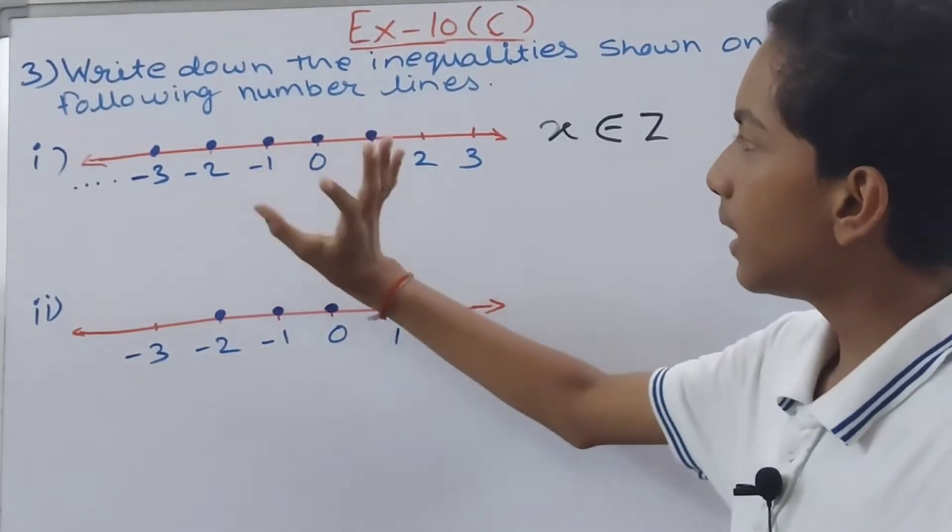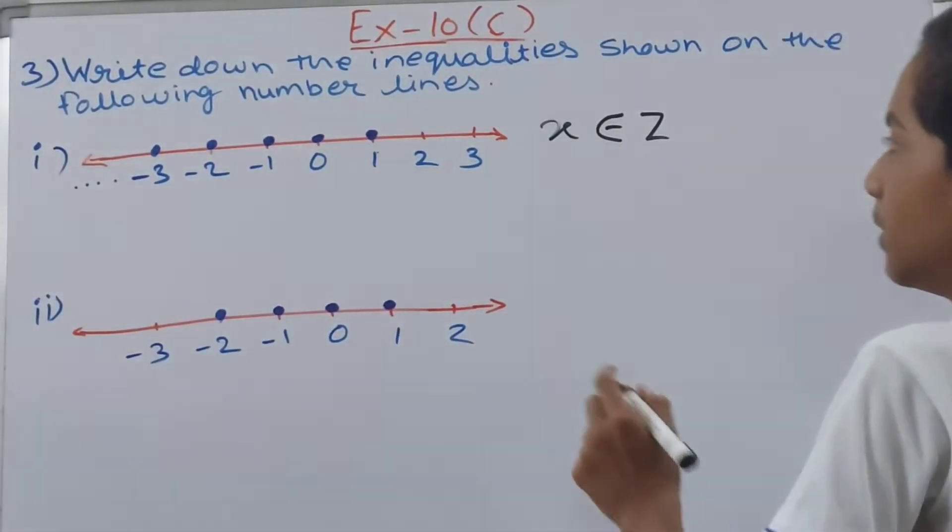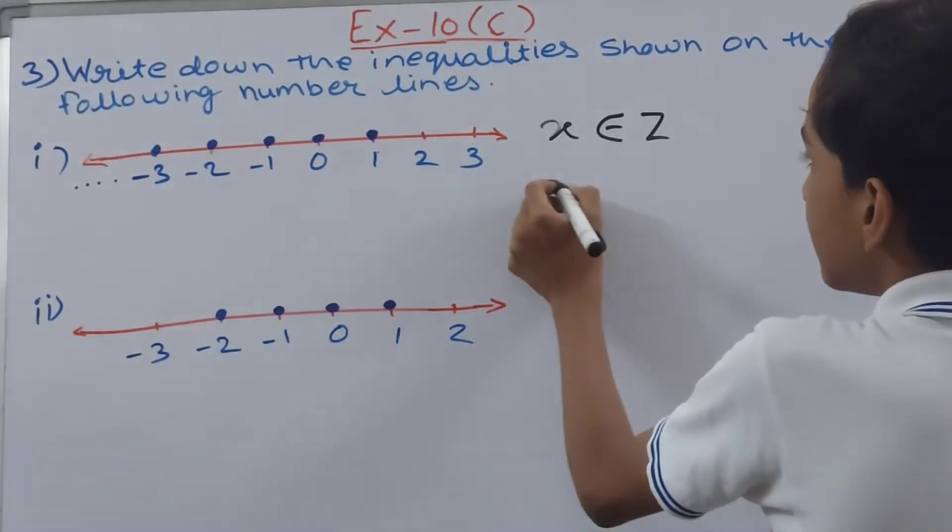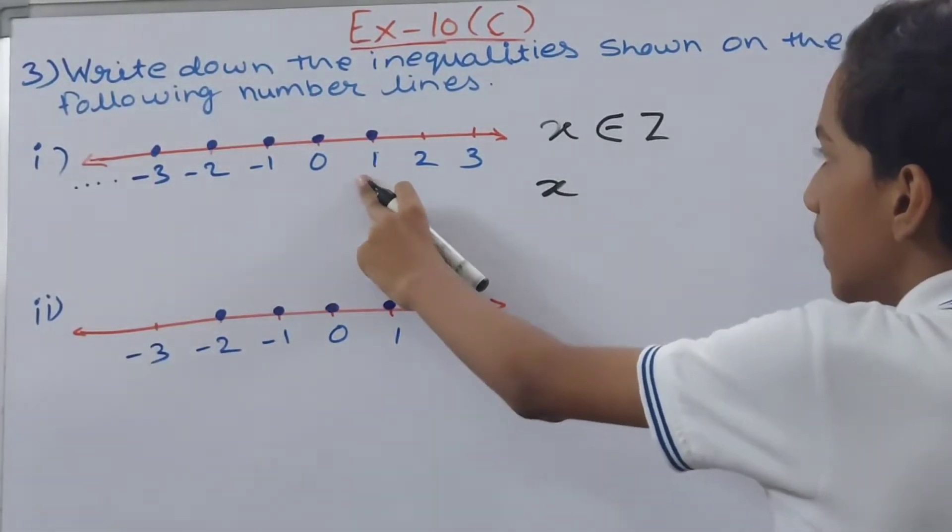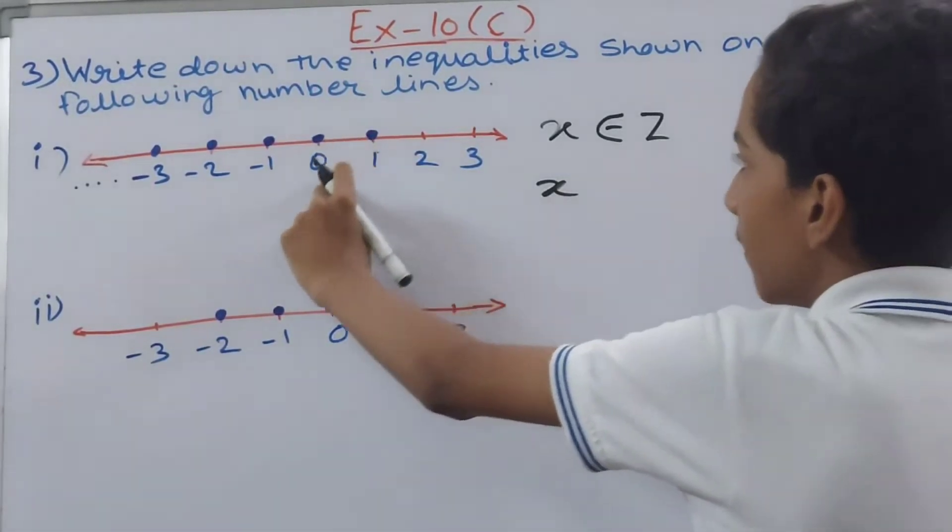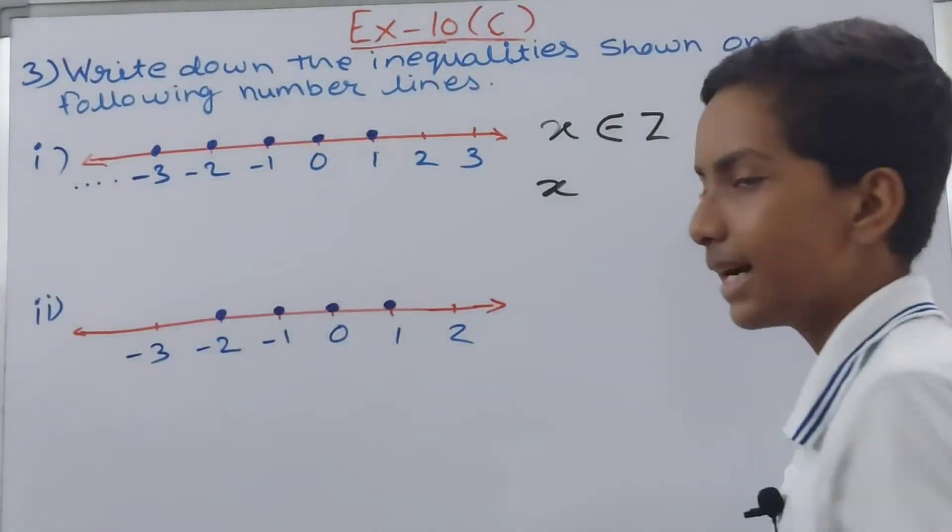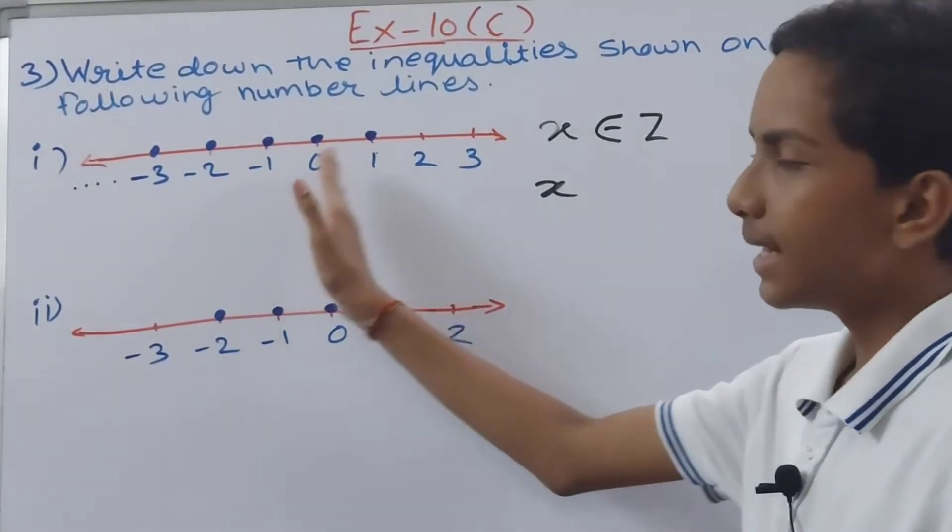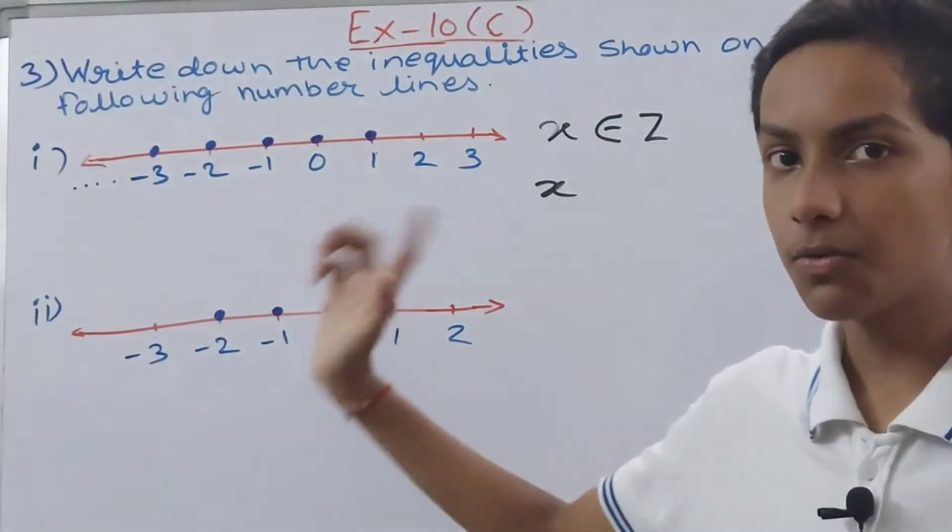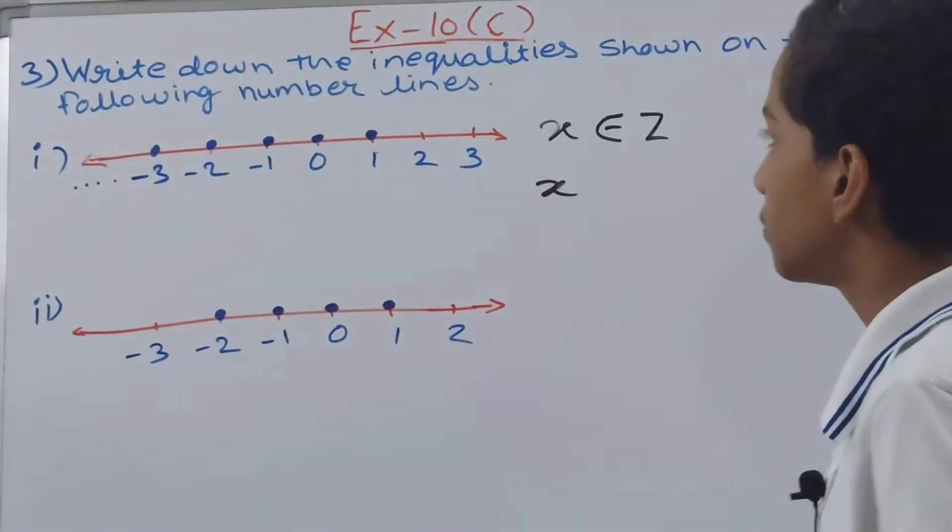Now you write the inequality. Here you can write basically x is... and you see if I take this as 1, and the values here are values less than 1. So this means the value of x is less than 1 or equal to 1 because 1 is also shaded here. So this means x is less than or equal to 1.